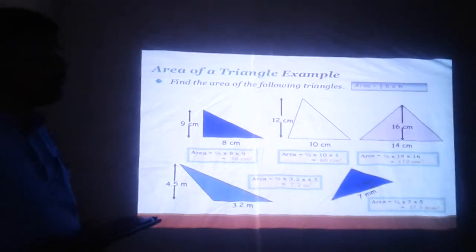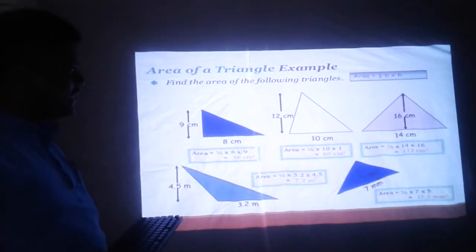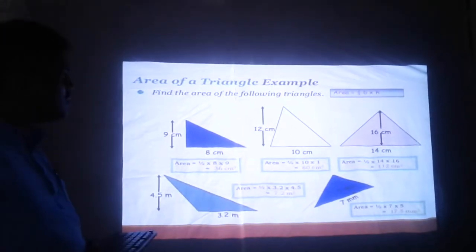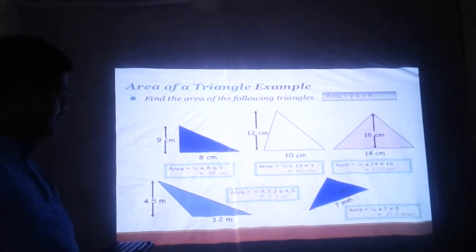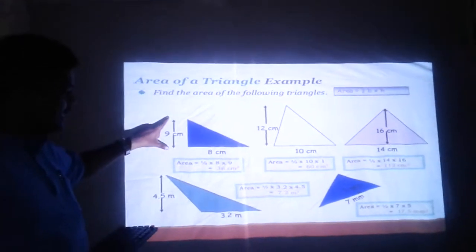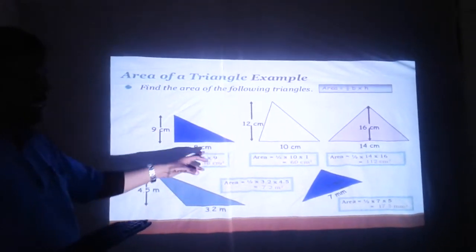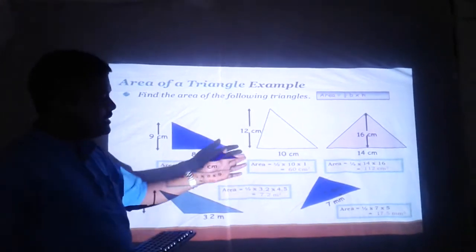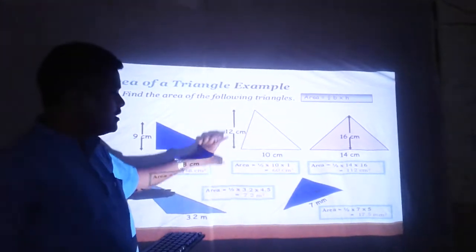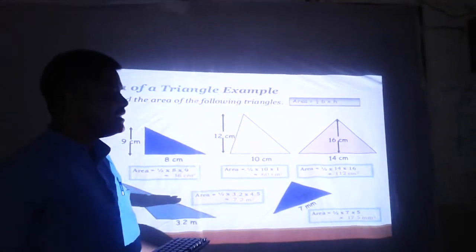Now we will check our understanding by solving some examples on area of a triangle. Find the area of the following triangles. We know the formula: area of triangle equals one-half base into height. In the first example, base is 8 cm, height is 9 cm. Area equals one-half into 8 into 9, which comes to 36 cm squared. For the second figure, the base is 10 cm, the height is 12 cm. Area equals one-half into 10 into 12, that is equal to 60 cm squared.